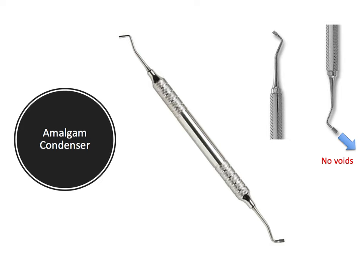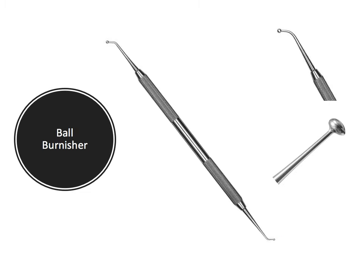The amalgam condenser is used to condense amalgam into the depths and corners of a cavity preparation to ensure there are no voids in the material; it can also be used for condensing composite. The working end is called the nib, and the face is the actual end that contacts the restorative material being condensed — it can be smooth or serrated. The ball burnisher, one of my personal favorites, typically has two ends: a small round end and a larger football-shaped end. It's great for burnishing and carving the surface of an amalgam restoration before it sets, or for smoothing the occlusal surface of composite before curing.